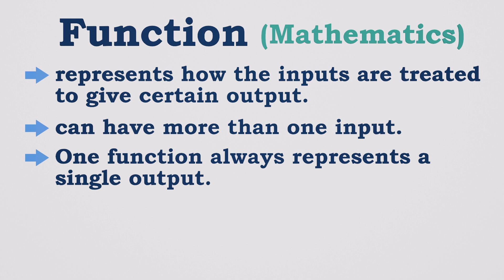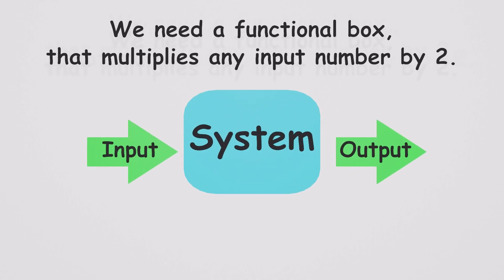In mathematics, we deal with numbers, and just like machines, we can create functional blocks that take input numbers, process them, and give outputs. For example, let's say we need a functional box that multiplies any input number by two. We can show the output of this system like this.